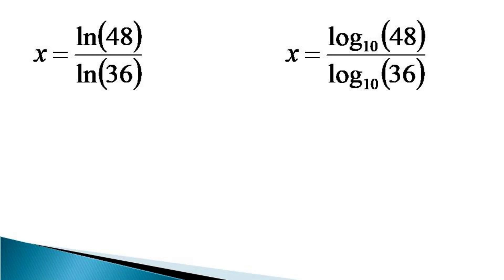and the numerical values accurate to the four places are put to get x is equal to 3.8712 by 3.5835 and for the normal log,